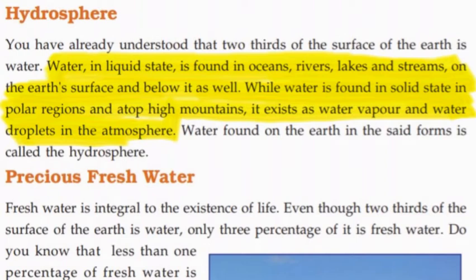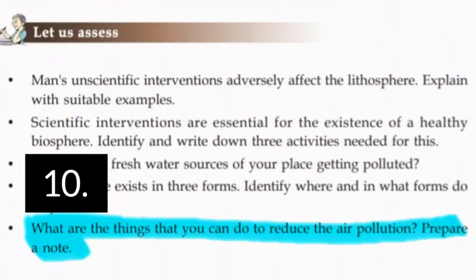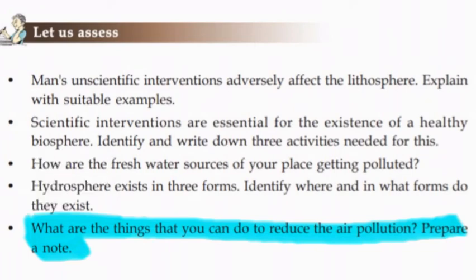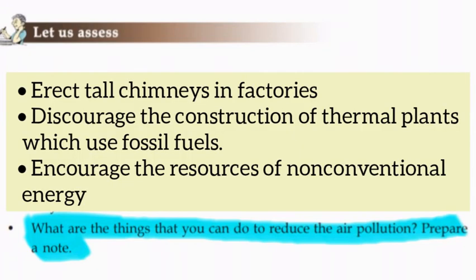What are the things you can do to reduce air pollution? Erect tall chimneys in factories, discourage the construction of thermal plants which use fossil fuels, and raise resources of non-conventional energy.